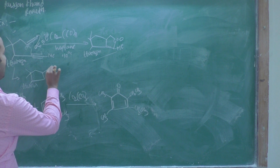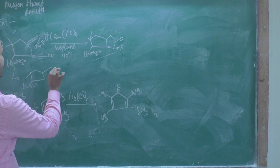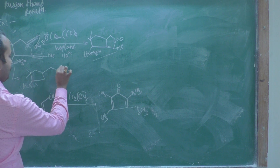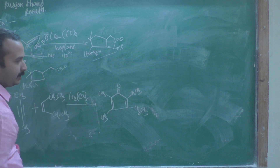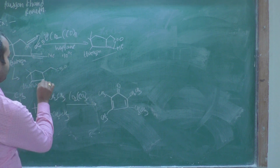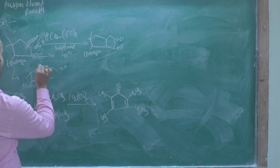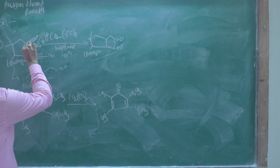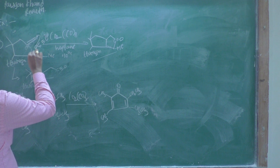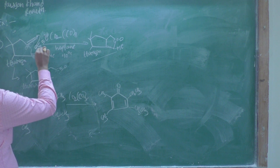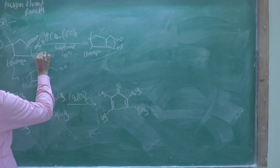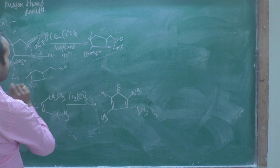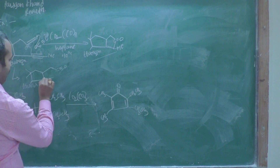This is the carbonyl group you have to attach. That is C triple bond N. That negative charge attacks this carbon atom, and therefore the pi bond is formed with the negative charge on this carbon atom.